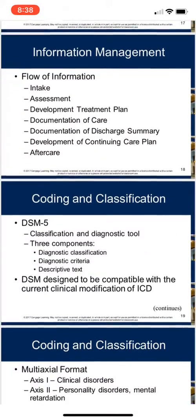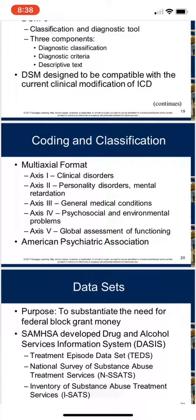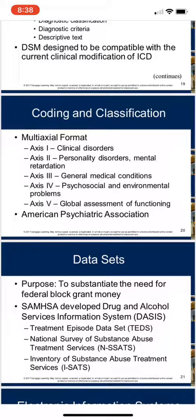Moving on to coding and classification on page 296. On this slide they list the multi-axial format, but when we get down into the actual text, DSM-5 does not use this five-axis system. They don't use these five axes to report these conditions or problems anymore. Selecting a coding or classification system for a substance abuse treatment facility depends on the level of care provided by the facility and the type of funding used to support its programs. In general, when ICD and CPT codes are required for reimbursement purposes, the codes are assigned following the same guidelines and conventions that apply to other inpatient and outpatient settings.